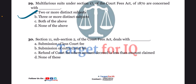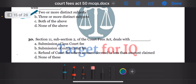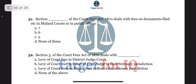Next question: section 11, subsection 2 of the act deals with dash. The options are A. Submission of less court fee, B. Submission of extra court fee, C. Refund of court fee when amount decreed is less than amount claimed, or D. None of these. The correct answer is option C. Refund of court fee where amount decreed is less than amount claimed.